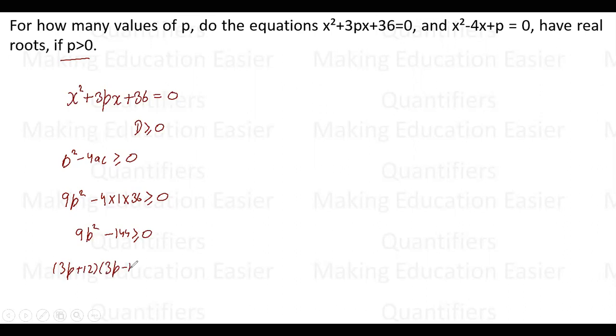Now if I use the wavy curve method, there are two critical points: p is -4 and 4. I hope you all remember the class. So p is -4 and 4, and greater than equal to 0, which means this region. If I apply the wavy curve...